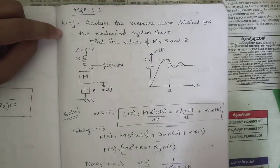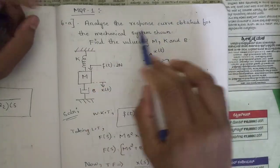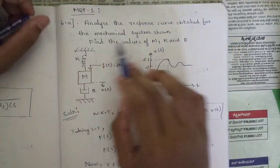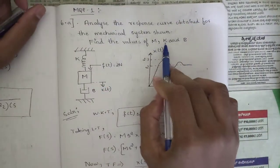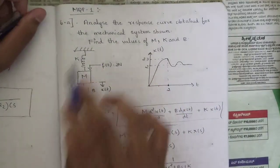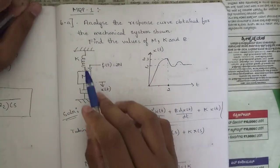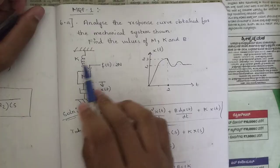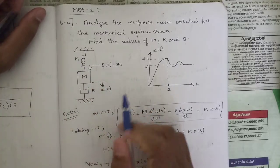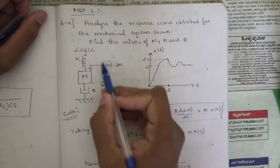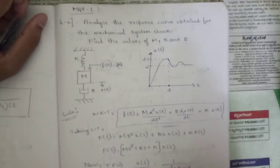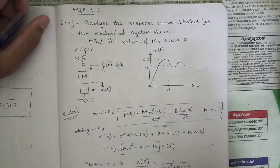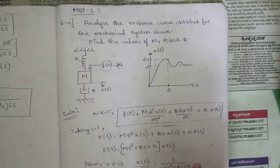This is question 6a: analyze the response curve obtained for the mechanical system shown, and find the values of m, k, and b respectively. Here is the mechanical system given — a simple mechanical system where m, b, and k are connected in series. The value of force f(t) is equal to 2N, where N is a constant from 1 to infinity.